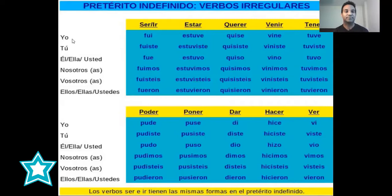Tenemos aquí a la izquierda los pronombres personales en español que ya ustedes conocen. Tenemos yo, tú, él, ella, usted, nosotros, nosotras, vosotros, vosotras, ellos, ellas, ustedes.